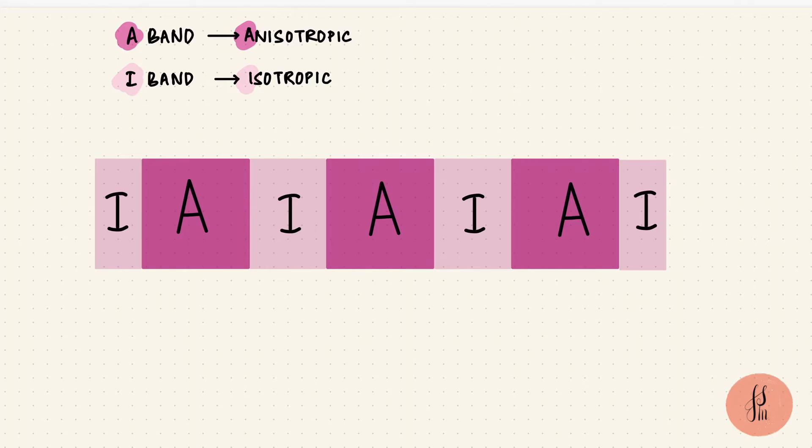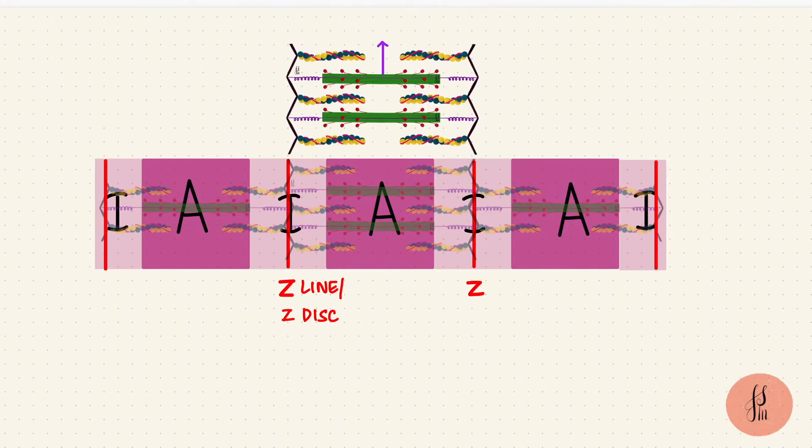That's why they get those letters. The I band is divided by these lines or disks called the Z lines or the Z disks. What forms these bands can be seen on electron microscopy. Thick and thin filaments that are responsible for the striations.